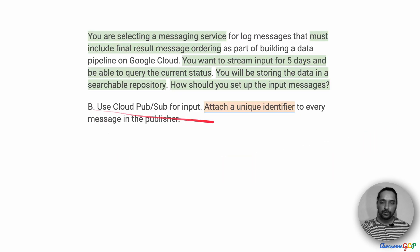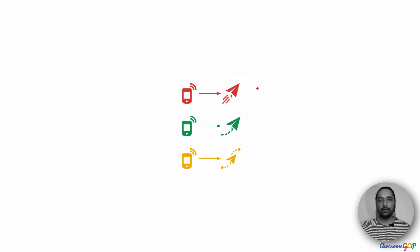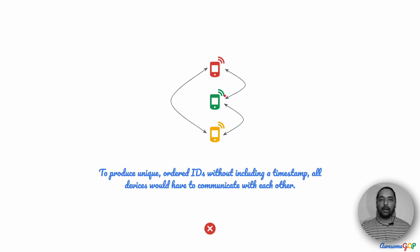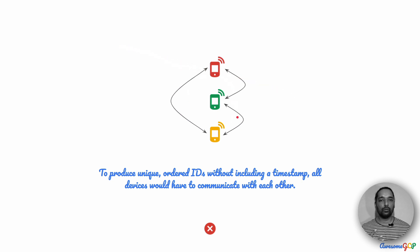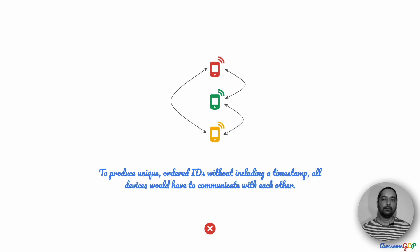Let's consider option B, which says we attach a unique identifier to every message in the publisher. There are multiple publishers — in our example, the red message was sent by the red device, green by the green device, and yellow by the yellow device. If they are going to send a unique ID that does not include a timestamp of any sort, then they would have to coordinate among themselves to figure out who sends next and who gets the next incremented value of that unique ID. This is not feasible, and it adds a lot of extra complexity. Therefore, this is not a viable option. It would also be wrong if we attach a timestamp when we receive the message, because that timestamp would be the reverse of when the messages were actually sent.